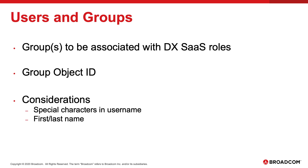In this first part of the walkthrough, we'll cover users and groups. You'll either create or assign an existing user to a group that you want to associate with a DX SaaS role — for instance, the tenant administrator or power user. Each of these groups will have a group object ID, which we'll need in the DX SaaS configuration wizard. I'll also cover some considerations when it comes to users and groups.